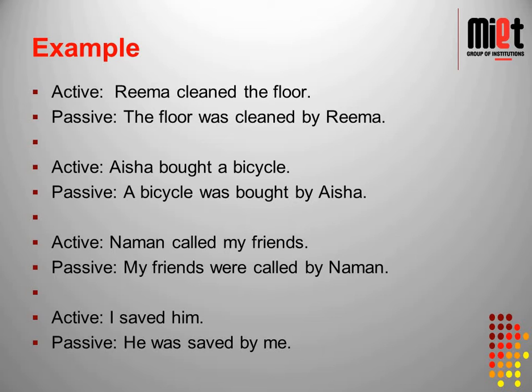Examples in simple past: 'Rima cleaned the floor' becomes 'The floor was cleaned by Rima'. 'Aisha bought a bicycle' becomes 'A bicycle was bought by Aisha'. 'Naman called my friends' becomes 'My friends were called by Naman'. 'I saved him' becomes 'He was saved by me'.